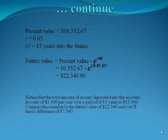Notice that the total amount of money we deposit into the account is $1,000 per year for 15 years, or $15,000. But the future value is $22,340. So the difference is $7,340. That's the money we get off of interest.